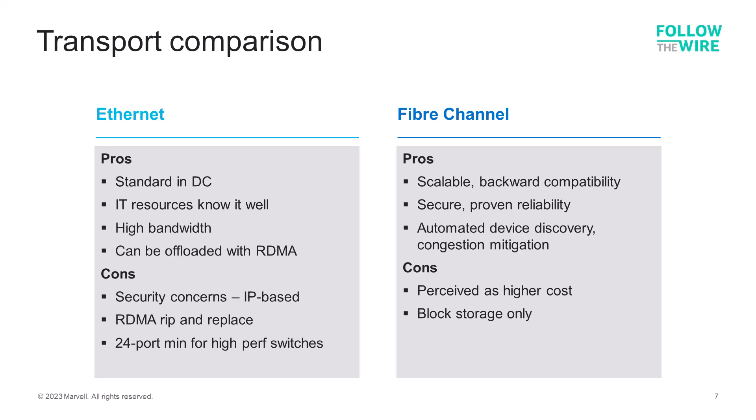One of the drawbacks of Fiber Channel is the perception that it's higher cost than Ethernet. While this was true when Ethernet speeds were 10 gigabits per second and below, as Ethernet speeds increase, so do the cost of NICs, cables, and especially transceivers and switches. Fiber Channel switches are pay-as-you-grow — they come in 8 to 12 port increments that you license as you need them, making them much more affordable than 100 gigabit Ethernet type switches. Another thing to be aware of is that Fiber Channel only supports block storage, so if file or object storage is required, you have no choice other than Ethernet for your storage network.